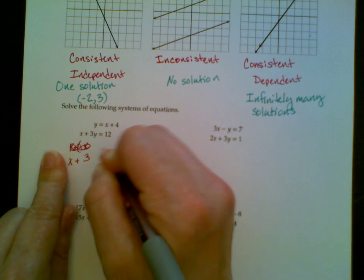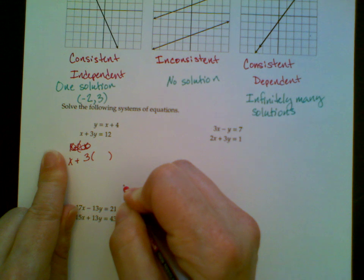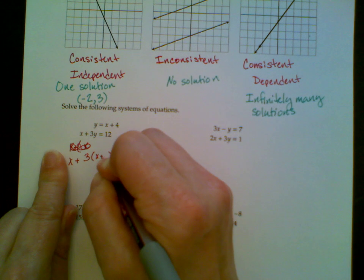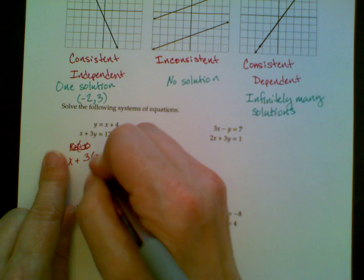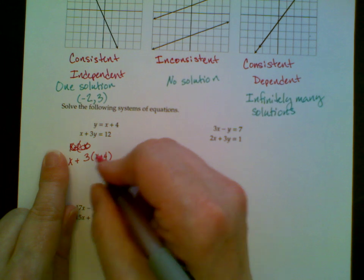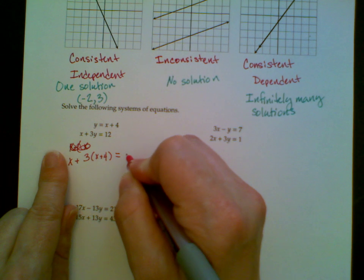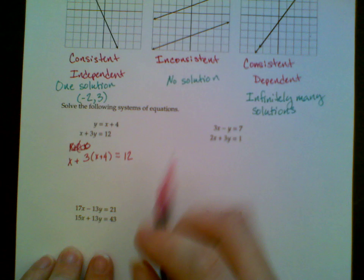So this is x plus 3, and then I'm substituting in x plus 4. Notice I put parentheses around that when I substituted. That is very important. And that is equal to 12.